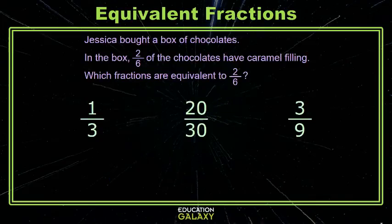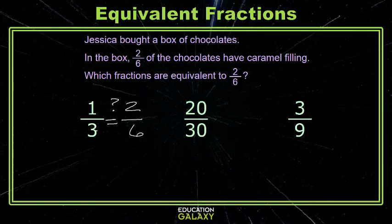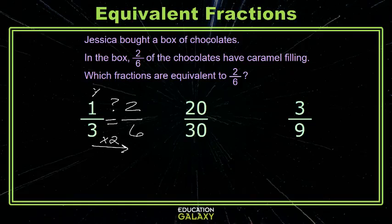Here I'm looking for fractions equivalent to two-sixths. Is one-third equivalent to two-sixths? Well, how could I get from three to six? I would need to multiply by two. If I multiply the three by a two, I also need to multiply the one by a two, and yes, this is an equivalent set of fractions.